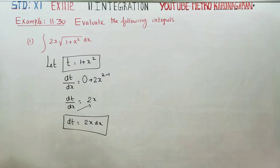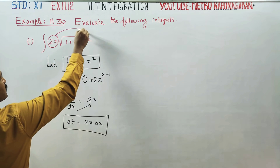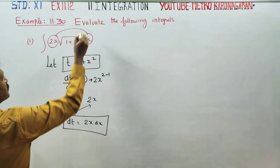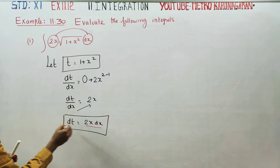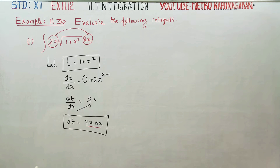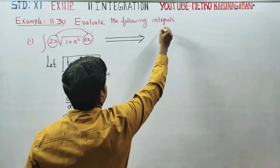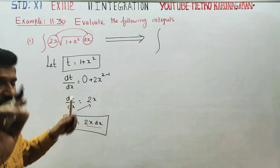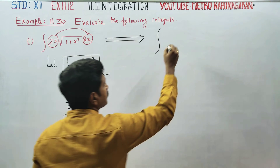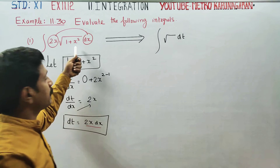dt is equal to 2x dx. So 2x dx equals dt. The integrand becomes square root of 1 plus x square times 2x dx, which is replaced by square root of t times dt.